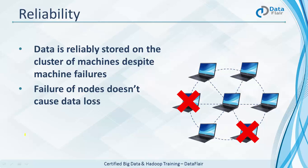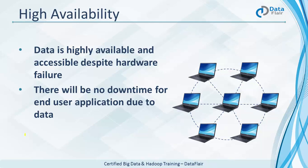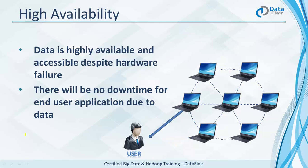Even if your disk crashes or your machine burns out — in the most extreme cases — your data is reliably stored and you will never have data loss issues. High availability means data is accessible even in the worst case, such as when a machine goes down, with no downtime for end-user applications. For example, if a user is reading data from a node and that node or the link goes down, the user will automatically get the data from another node.